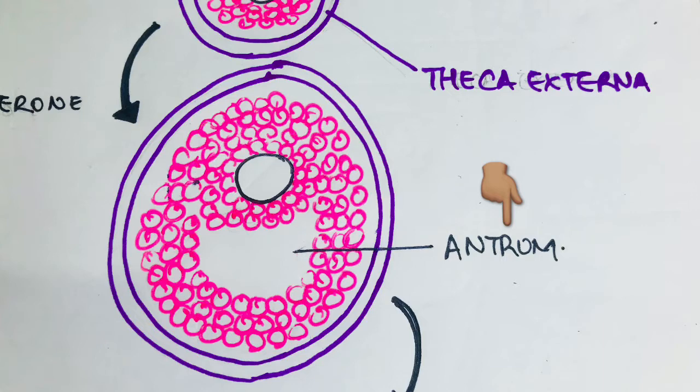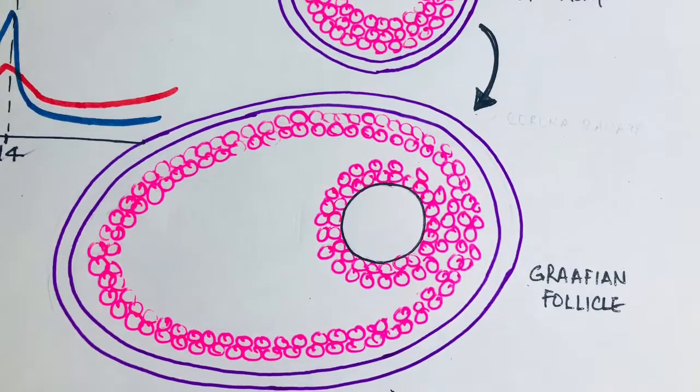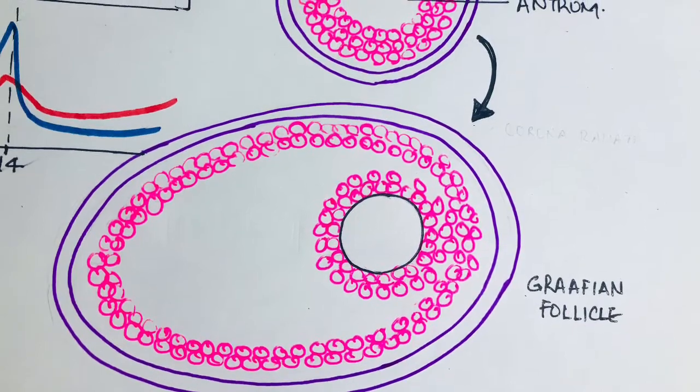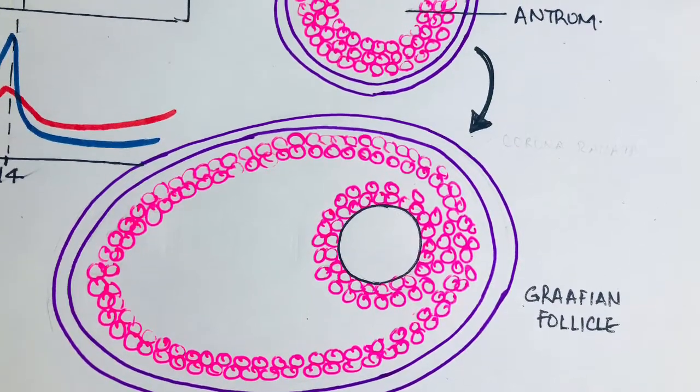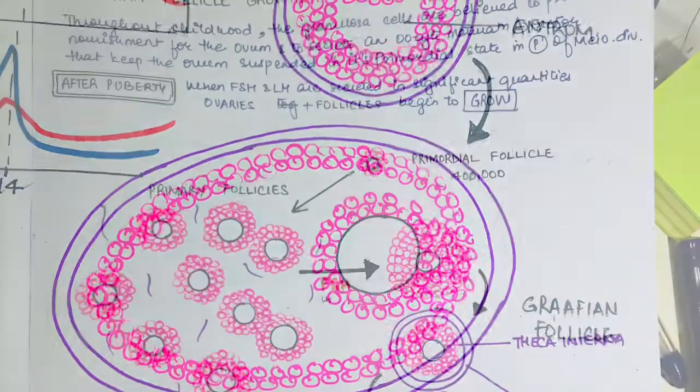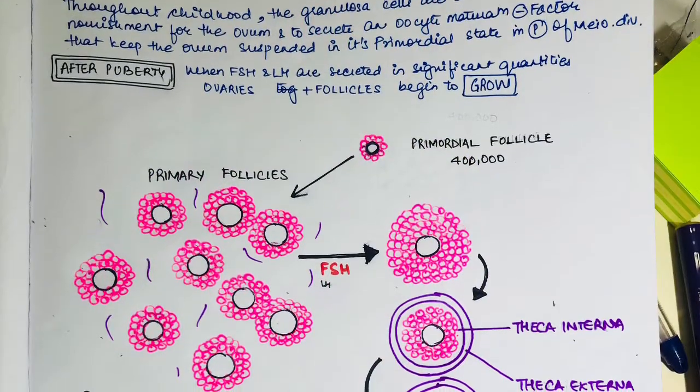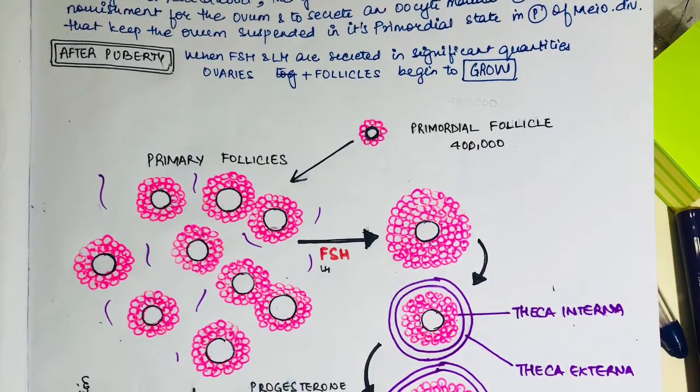Now this growth is stimulated by FSH alone. Greatly accelerated growth occurs, leading to a larger follicle known as Graafian follicle. The causes of the accelerated growth are mentioned in the description below.